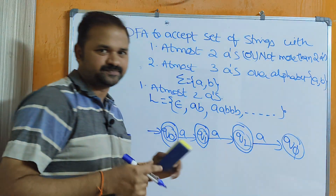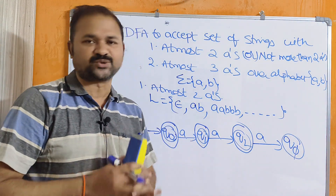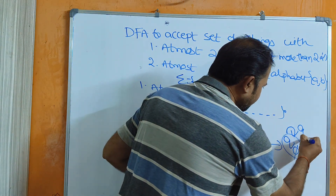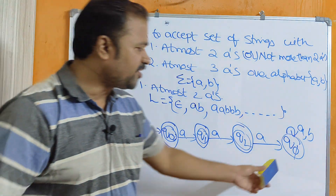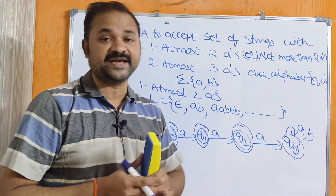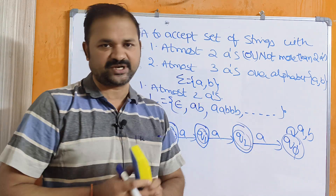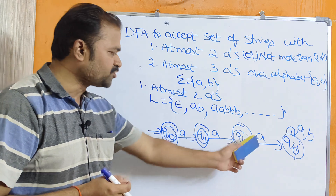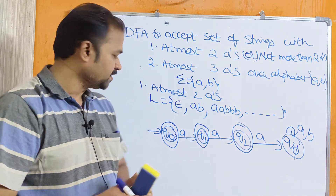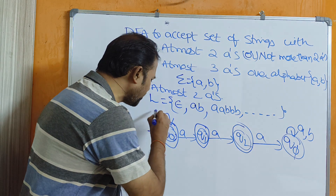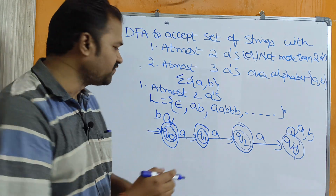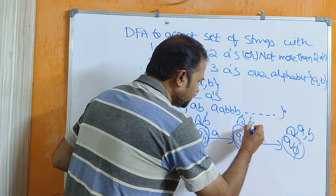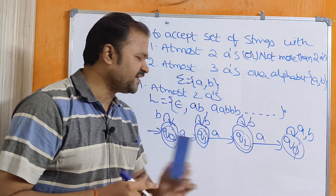Q-pi is just like a dead state, because the maximum is 2 A's only. On Q-pi, if we have any number of A's and B's, we stay in the dead state — we reach Q-pi when we read a third A. Since B is not yet handled on Q0, Q1, and Q2, we add self-loops on B for each of those states, since B's can appear before or after any A. Now this is a complete, valid DFA.